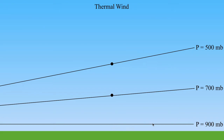As we move in the horizontal direction on this perfectly flat isobar, my pressure is not changing in the horizontal direction. That means I have no horizontal pressure gradient, which means the pressure gradient force along this horizontal line is zero. If we're thinking about geostrophic wind — if the pressure gradient force is zero, the Coriolis force is zero, therefore I have zero wind. The wind along this horizontal line is just zero.